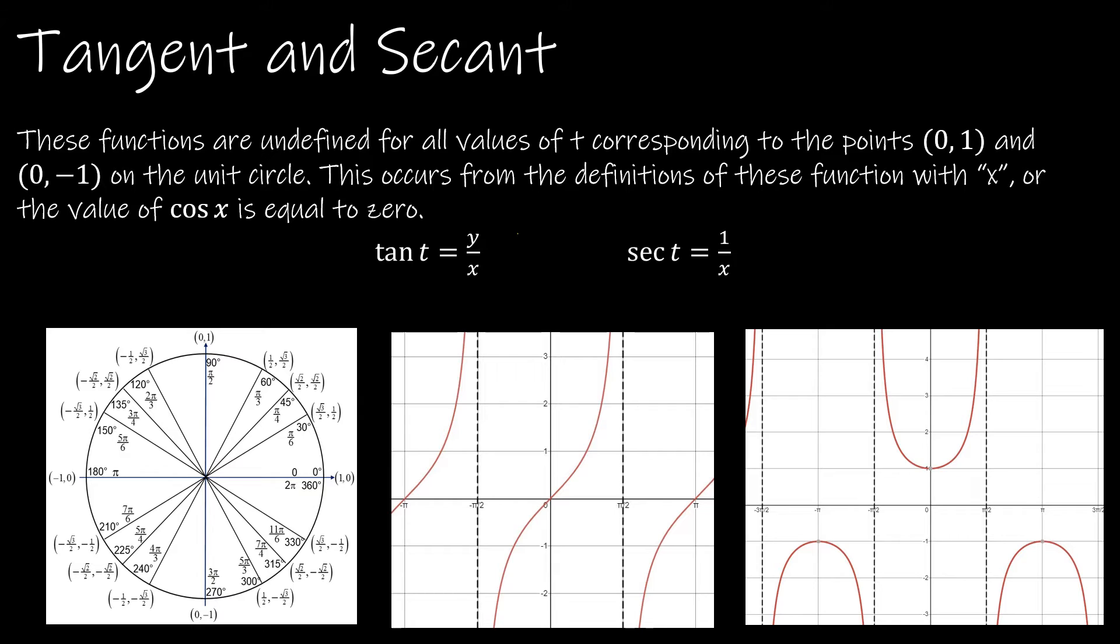So tangent is simply sine theta over cosine of theta. And we know that all of the ordered pairs on the unit circle are cosine theta, comma, sine theta. So essentially what I'm looking for is the x value or the cosine value. Where is that value 0? Because where that value is 0, I'm going to have a 0 in my denominator, and tangent will be undefined.